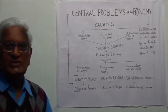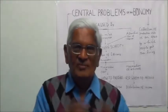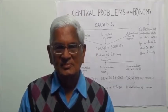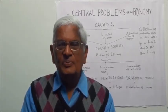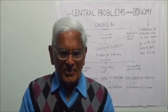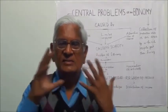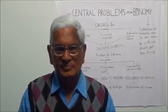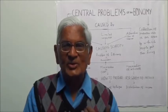Now the choice doesn't stop here. When you decide about a product, you also have to decide about the method of production. A product can be produced in a big factory or in a small factory. A product can be produced with the help of machines or simply with hands. A product can be produced in many ways. The choice before you is: which method should I adopt?